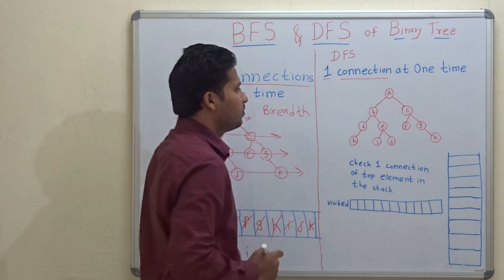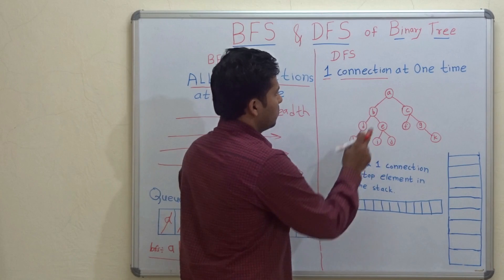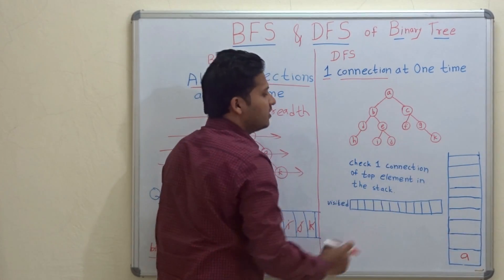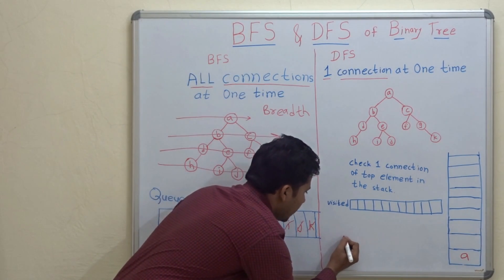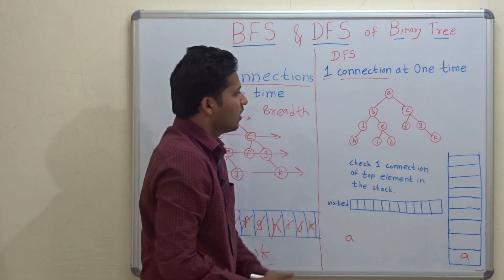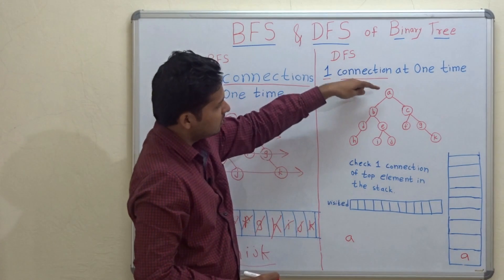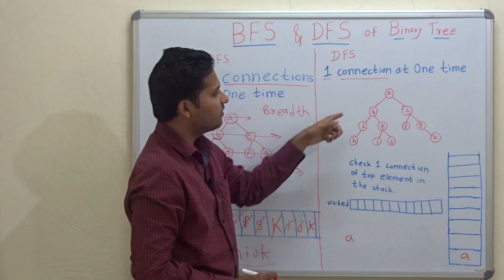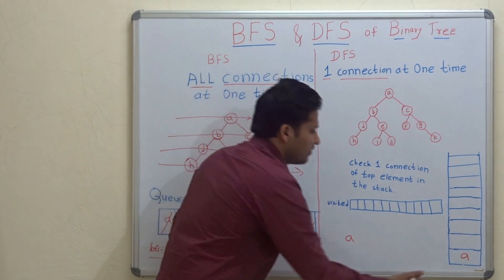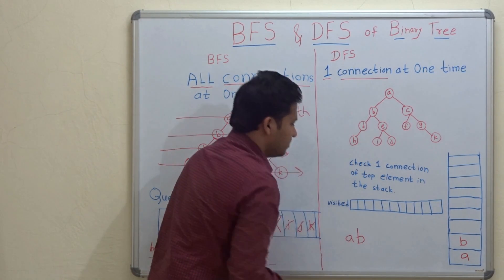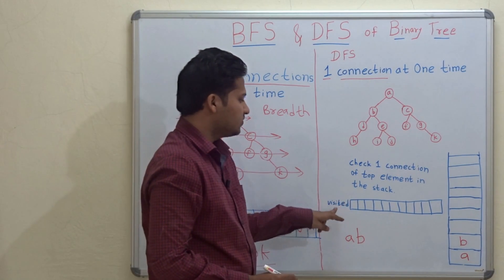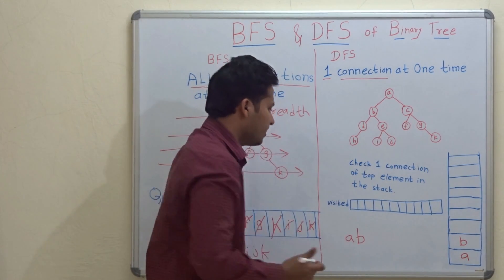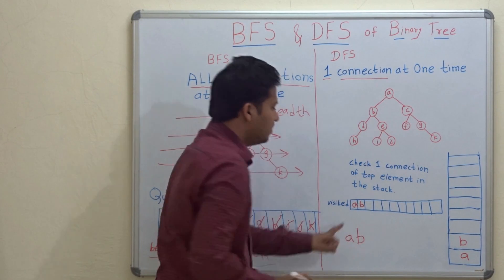Now let's solve the DFS example. We push A into the stack — we use a stack for DFS. Whenever I push one element, I write it in the answer — that is the DFS order. I also have a visited array. Whenever I push an element into the stack, I put it in the visited array, meaning I have visited that node.